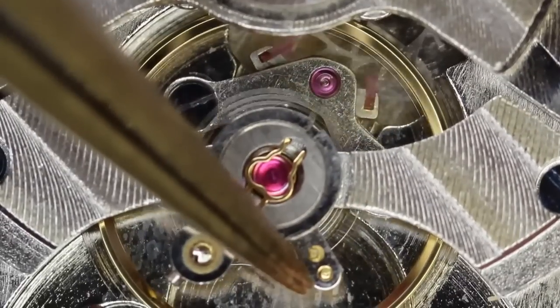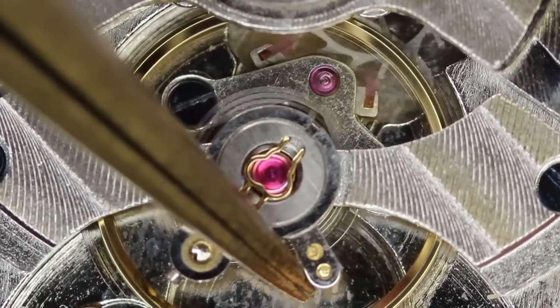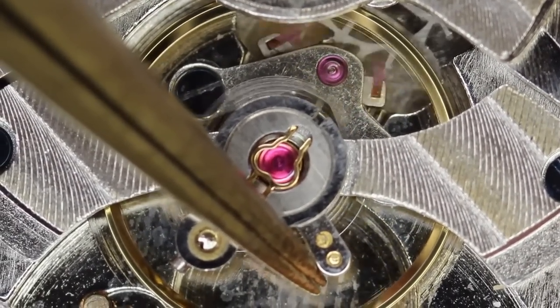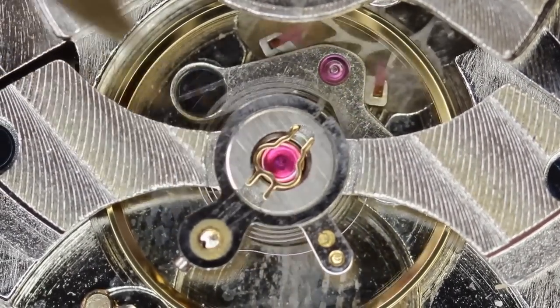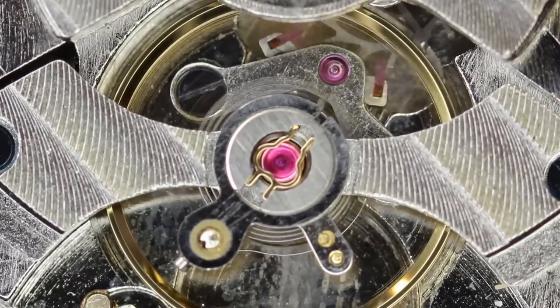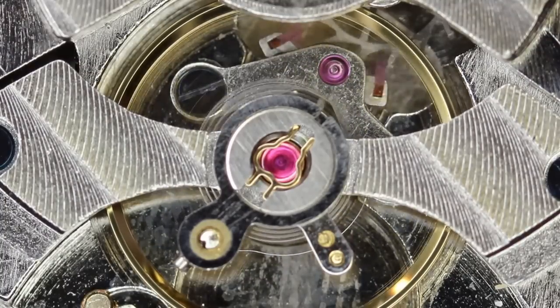Now the very first common reason for a watch to gain huge amounts of time every single day is magnetisation. What happens is the watch can come into contact with a magnetic field.